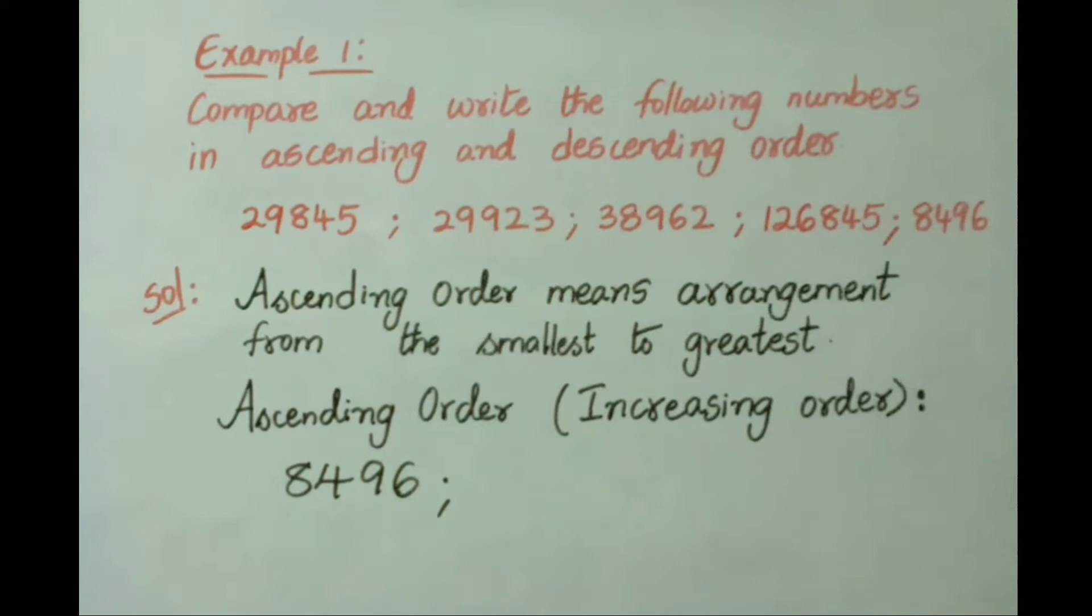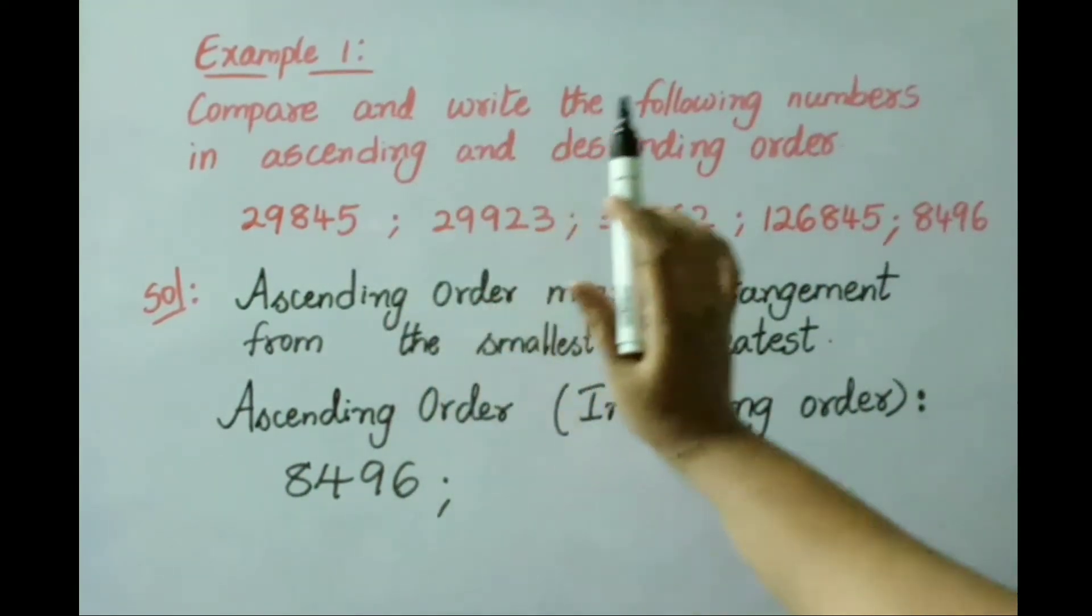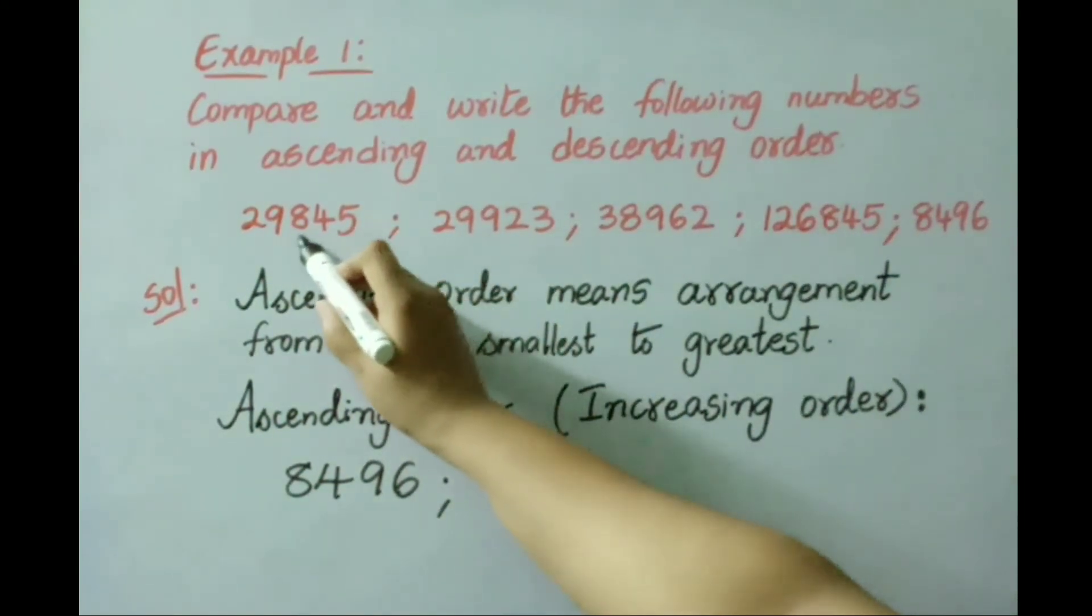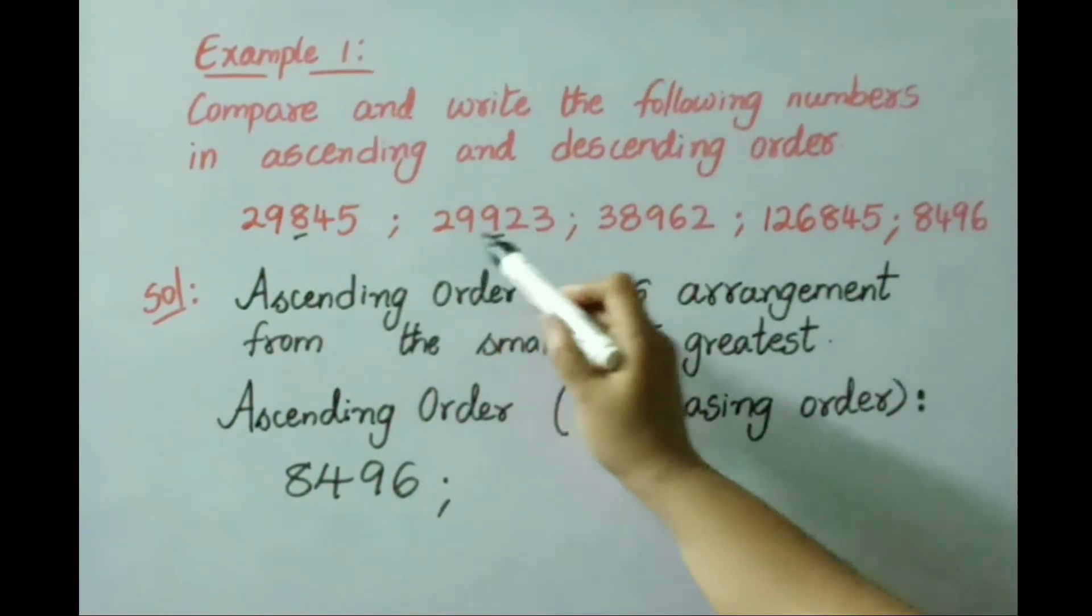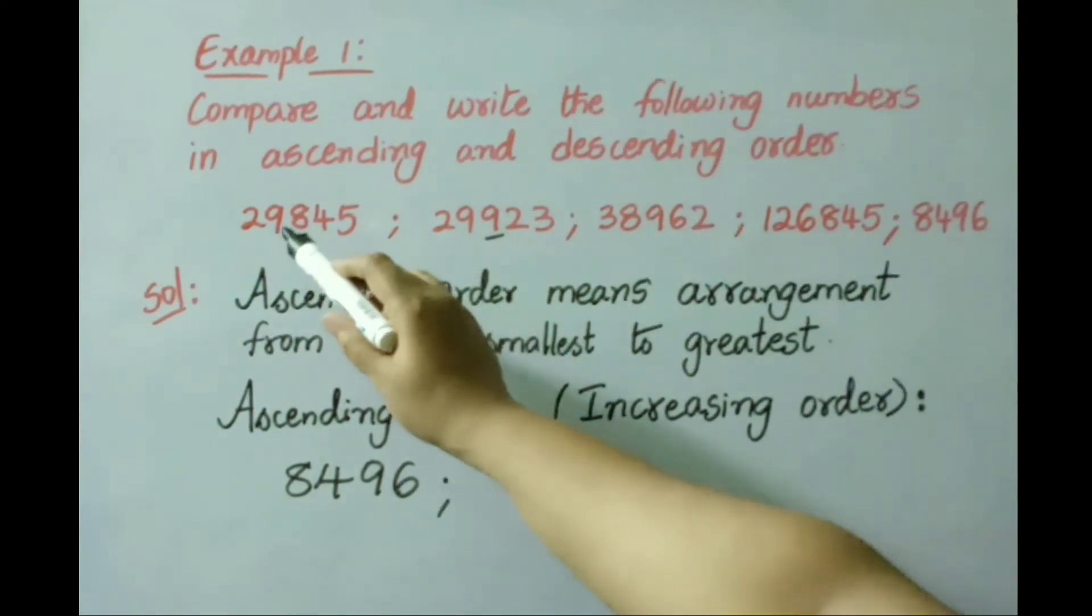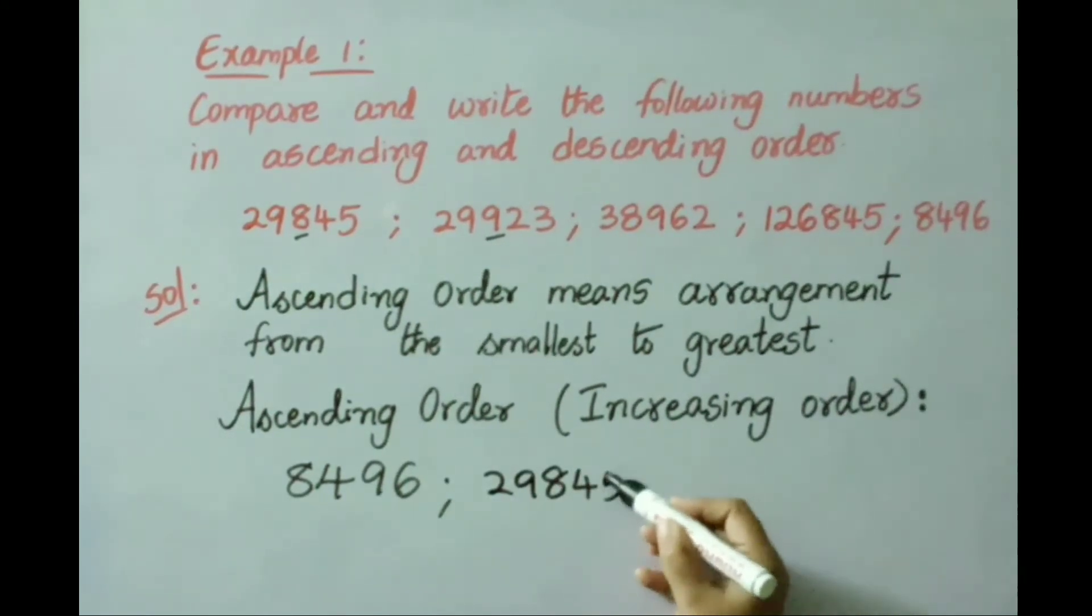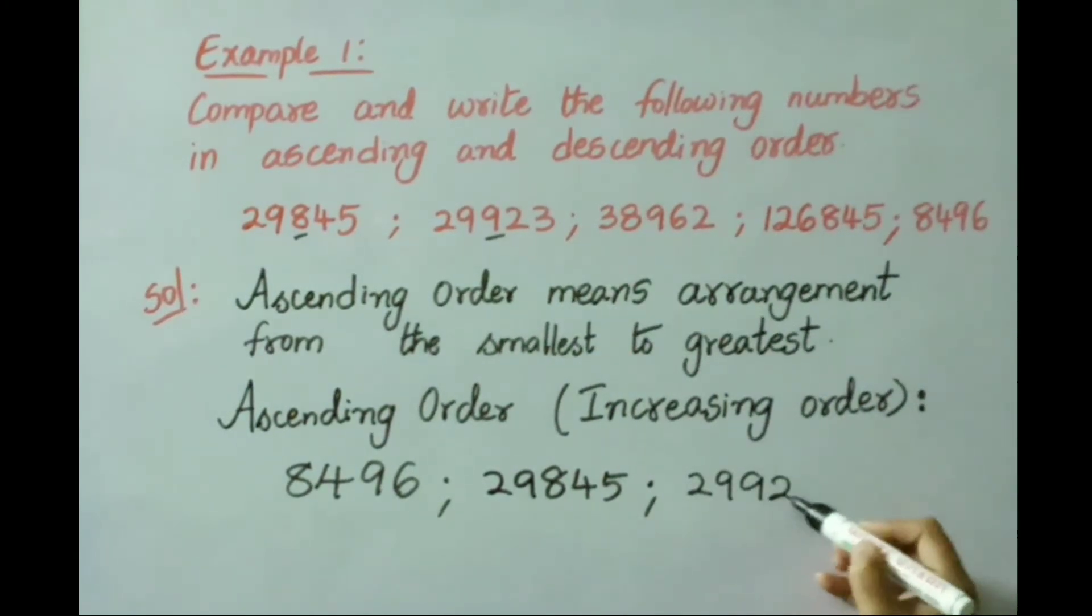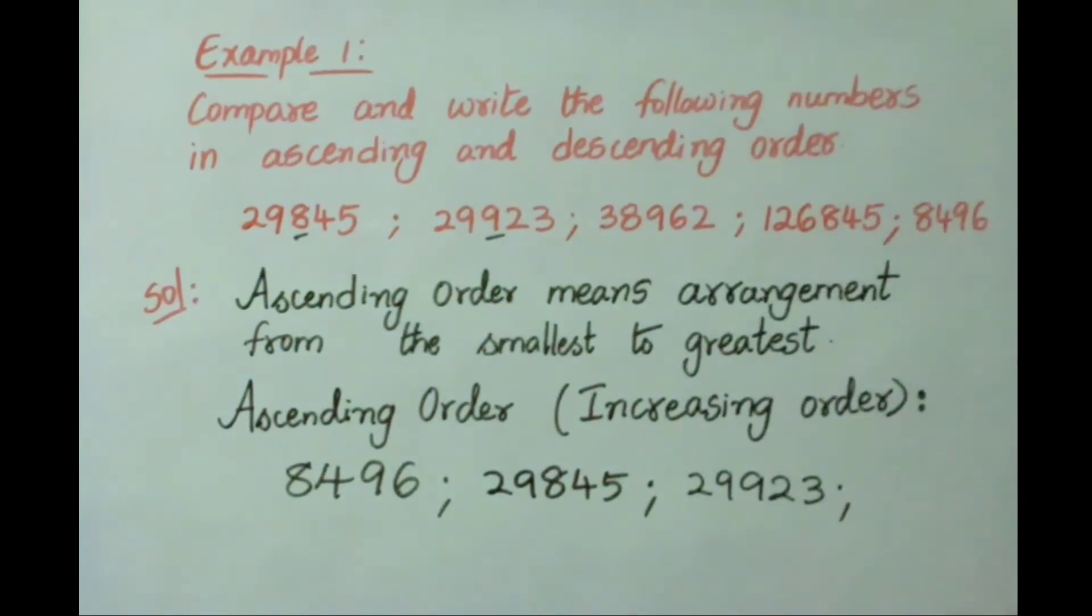See next one: 5-digit numbers. Here 29,000 and 38,000, so least is 29,000. See here, these two are 29,000 values only. Now check the hundreds place: 29,845 and 29,923. Which is the smallest among both of them? 29,845 is the smallest. Now write the next number, that is 29,923.